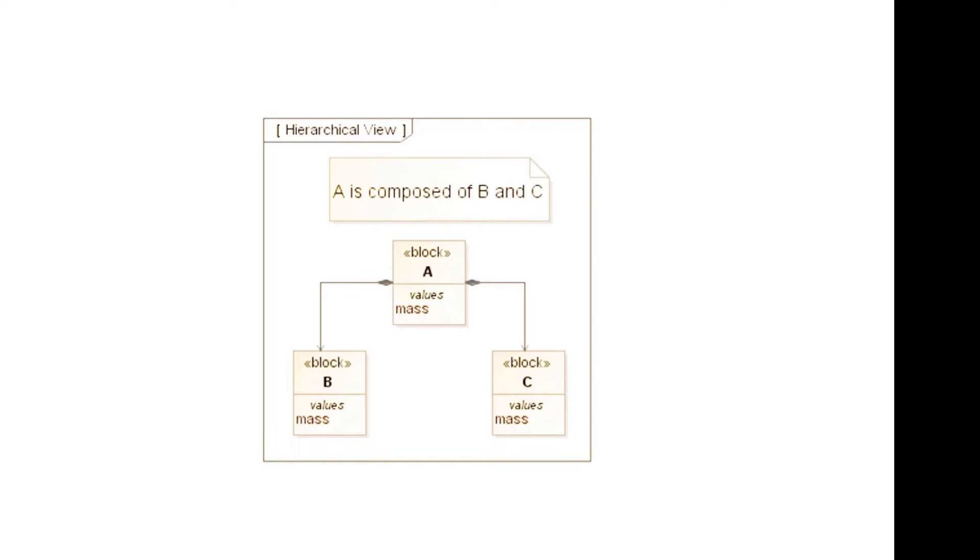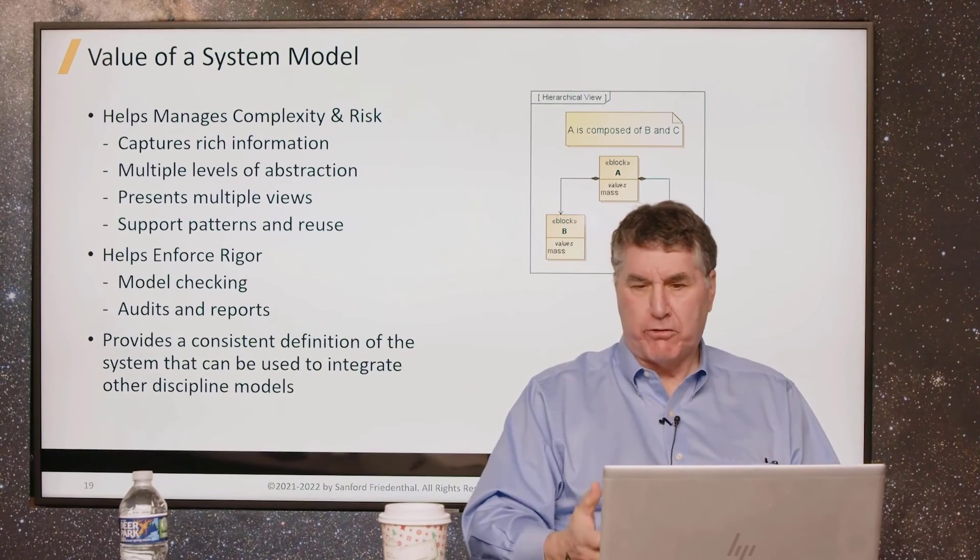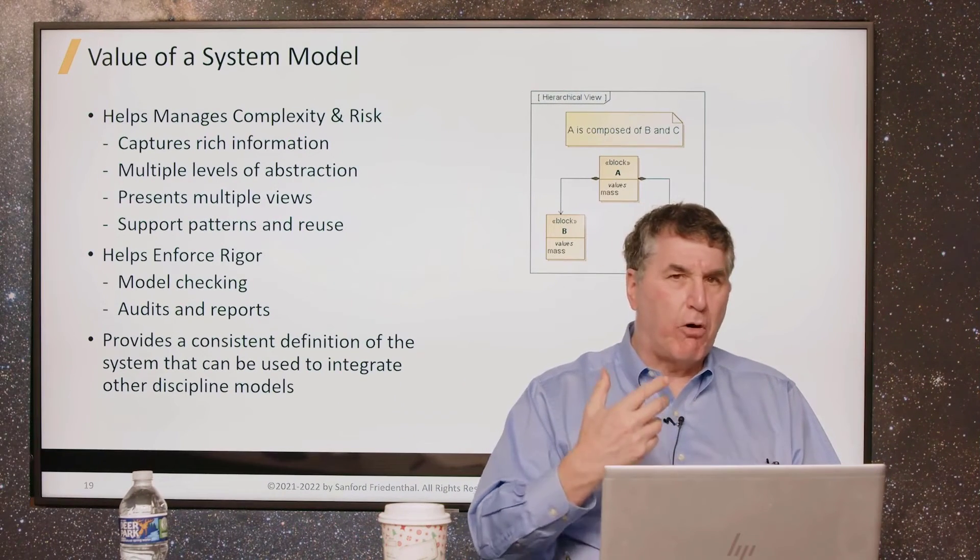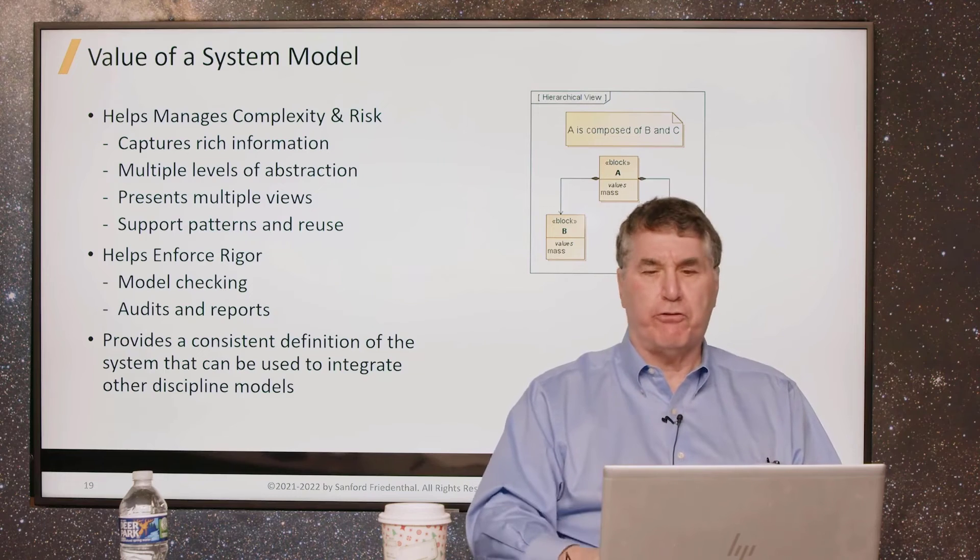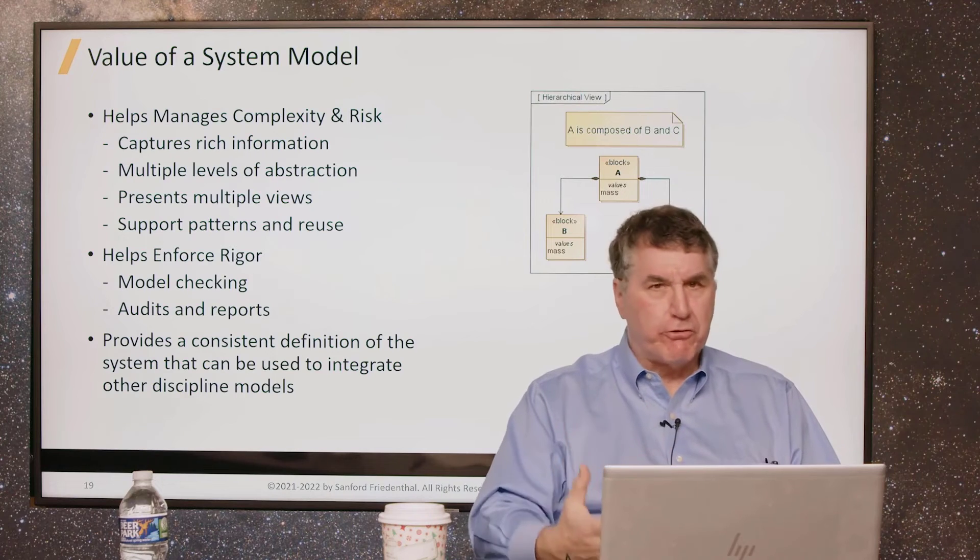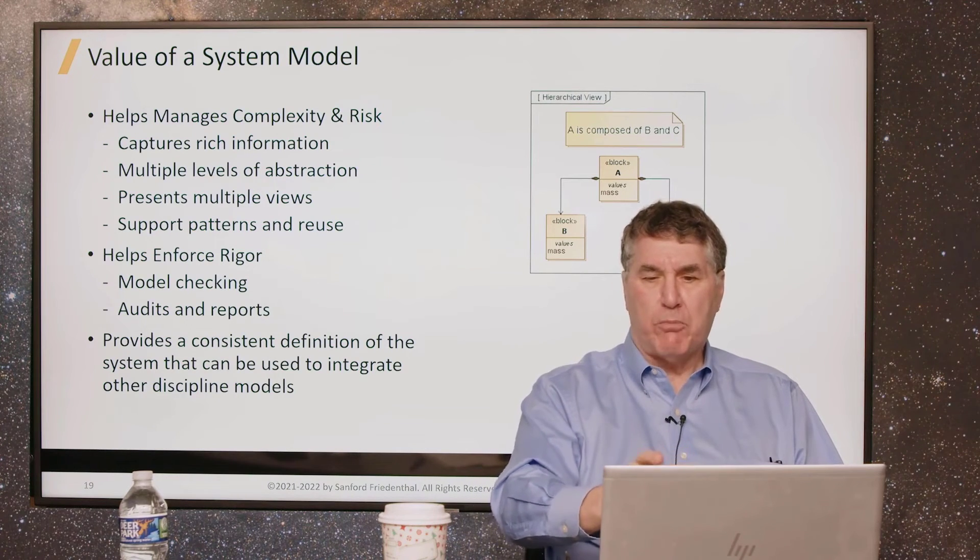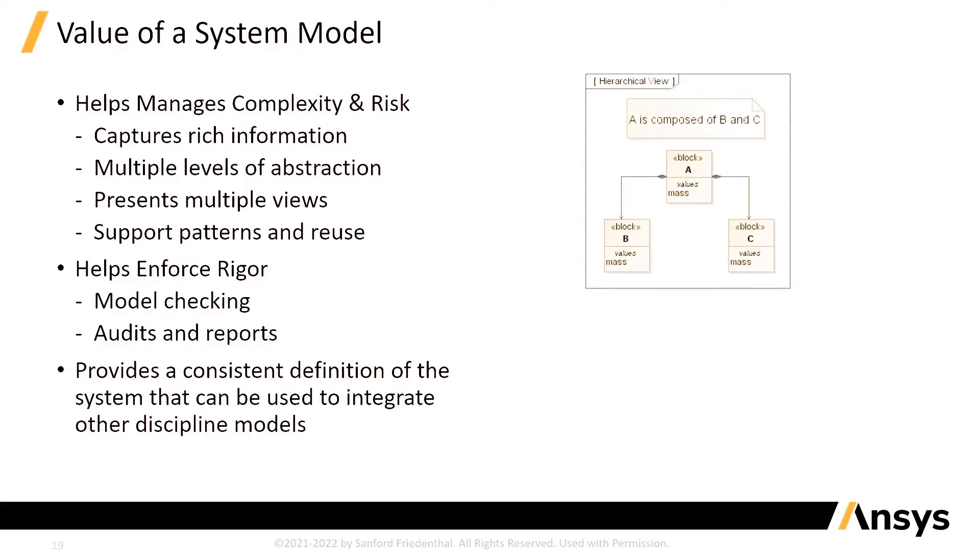What else does this model say? It says block A has a mass, block B has a mass, and block C has a mass. Well, this is obviously trivial. But you can add all different types of characteristics to these elements, to your system and its subsystems and its components. So, you can begin to elaborate all of the different elements of your system in this way and, in fact, add many other features.